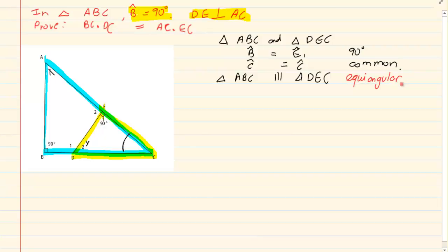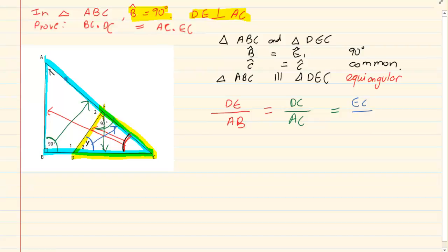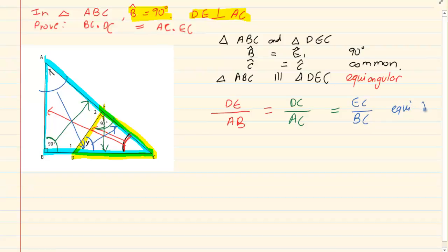Now if they are equiangular, it means they are similar, which means we can work out the ratio. If we are equiangular, for the small triangle we have DE and on the big triangle we have AB. Working with the 90-degree angle, for the small triangle we have DC and for the big triangle we have AC. Then for the last remaining angle, for the small triangle we have EC and for the big triangle we have BC. So we can prove that this ratio is the same because of the rules of equiangular triangles. If you need to put a reason, you can put equiangular triangles and it would work.